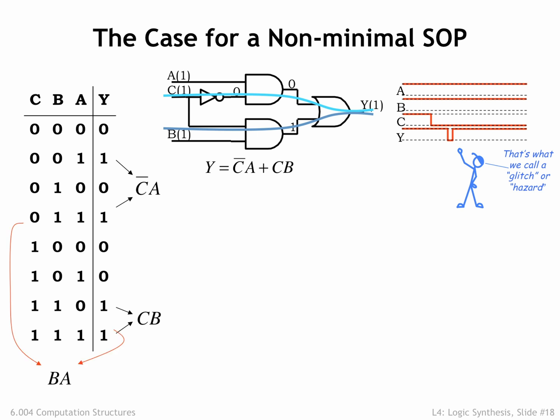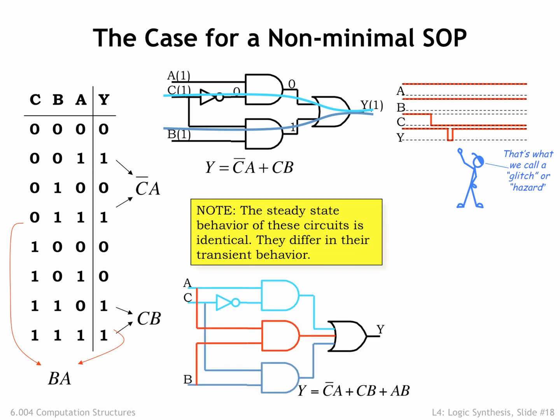If we include the third product term BA in our implementation, the circuit still computes the same long-term answer as before. But now when A and B are both high, the output Y will be 1 independently of the value of the C input. So the 1 to 0 transition on the C input doesn't cause a glitch on the Y output. If you recall the last section of the previous chapter, the phrase we used to describe the circuit is lenient.